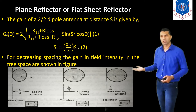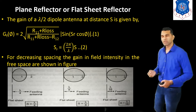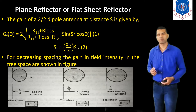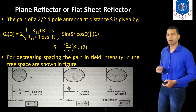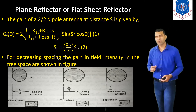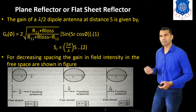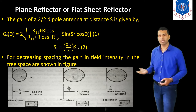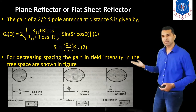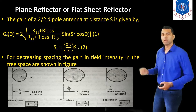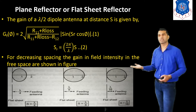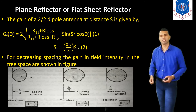Here we have three figures. The first figure shows s = lambda/4, and we can see the gain for that. As we decrease the distance, for s = lambda/8, we can see the gain is increased. For different distances, we can see the relation between the gain from these figures.